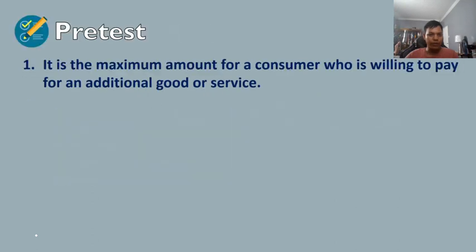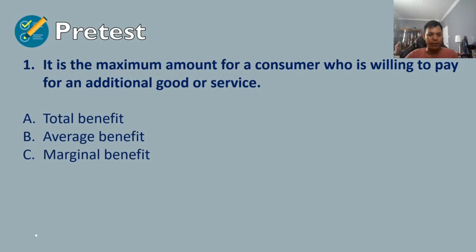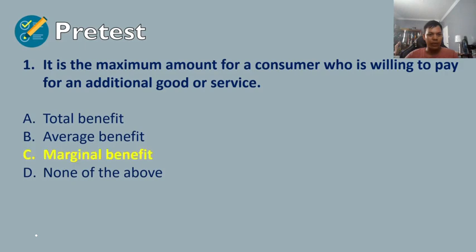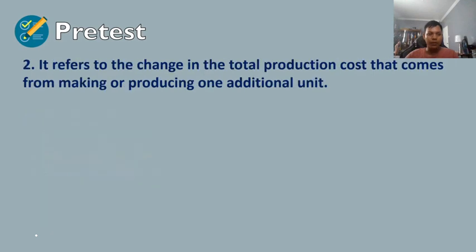Question number one: it is the maximum amount a consumer is willing to pay for an additional good or service. A) total benefit, B) average benefit, C) marginal benefit, or D) none of the above. The answer for number one is letter C, marginal benefit.